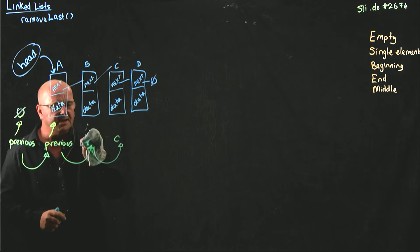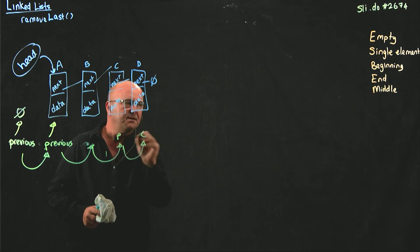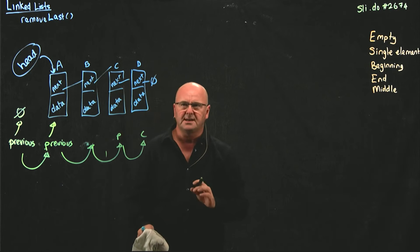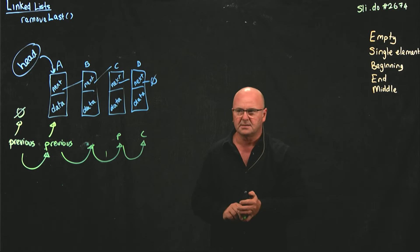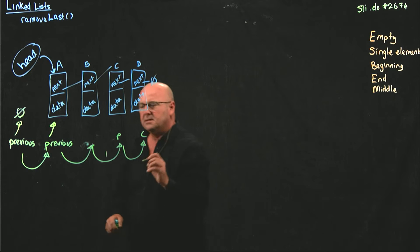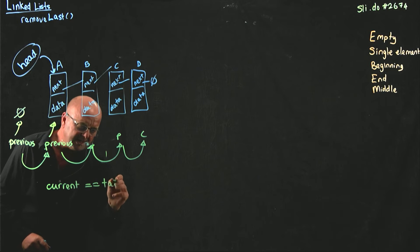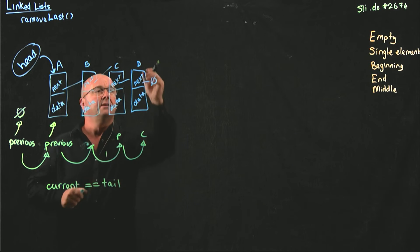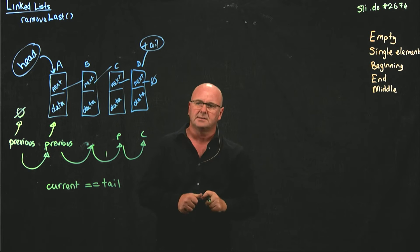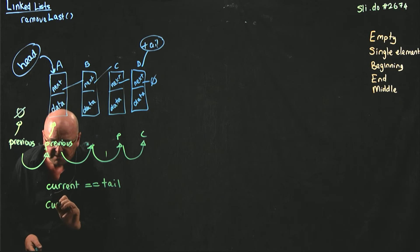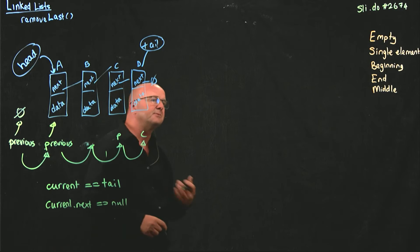And then I'm going to set previous to current and current to current.next, and keep doing that until I get to the end of the list. How do I know I'm at the end of the list? There are two ways to tell. The first way is if current is equal to tail — I'm at the end of the list. Or if current.next is null, I'm also at the end of the list.